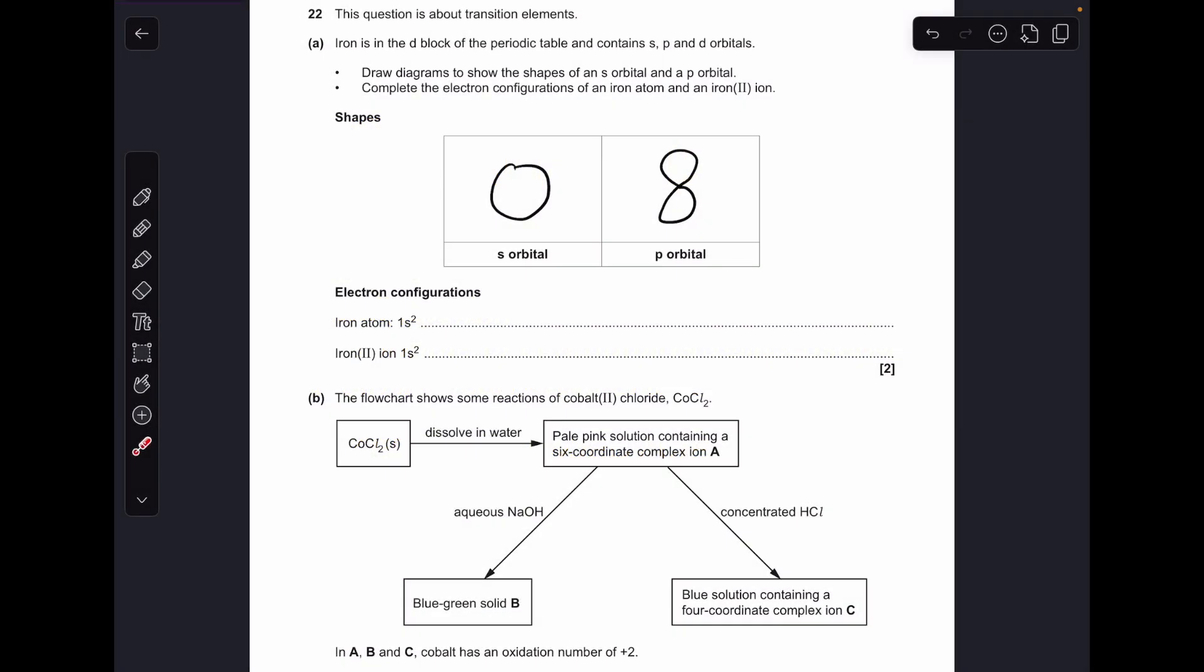So part A: the shape of an s orbital is spherical, so we just need to draw a circle there. And a p orbital has this dumbbell shape, so you need to show both lobes—that's one p orbital.